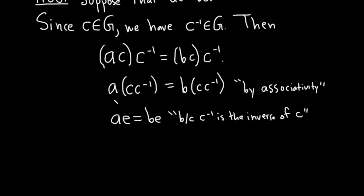And then a times e is simply a. b times e is simply b. And this is because e is the identity.